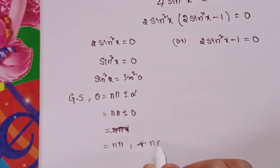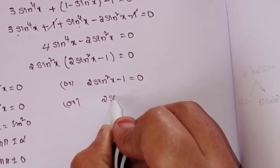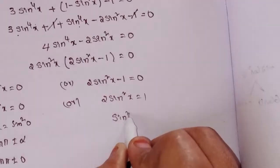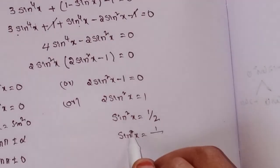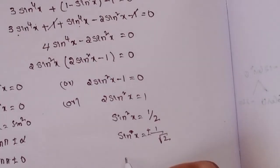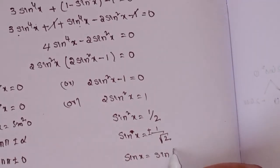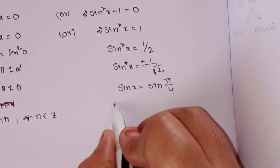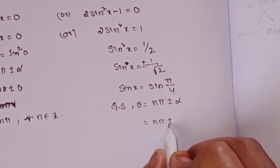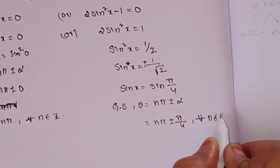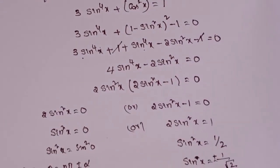From 2 sin²x minus 1 = 0: sin²x = 1/2. So sin x = ±1/√2, and taking the positive value, sin x = sin(π/4). The general solution is x = nπ ± π/4 for all n belonging to Z. This completes the solution to question 4, which is the fifth question in the exercise overall.